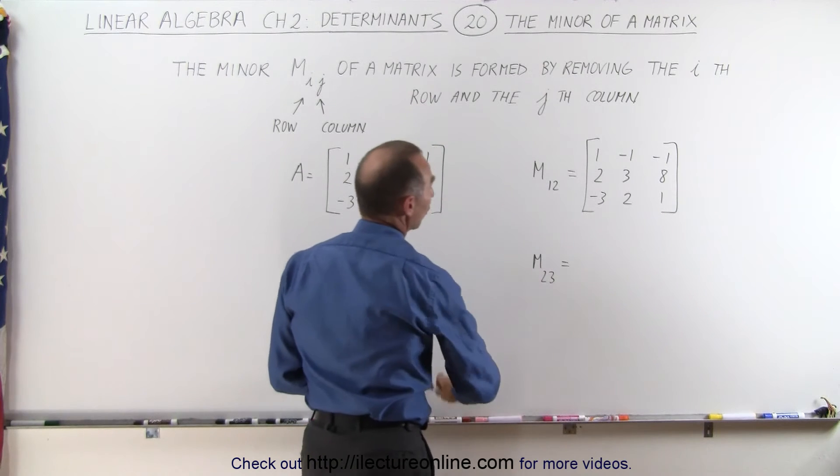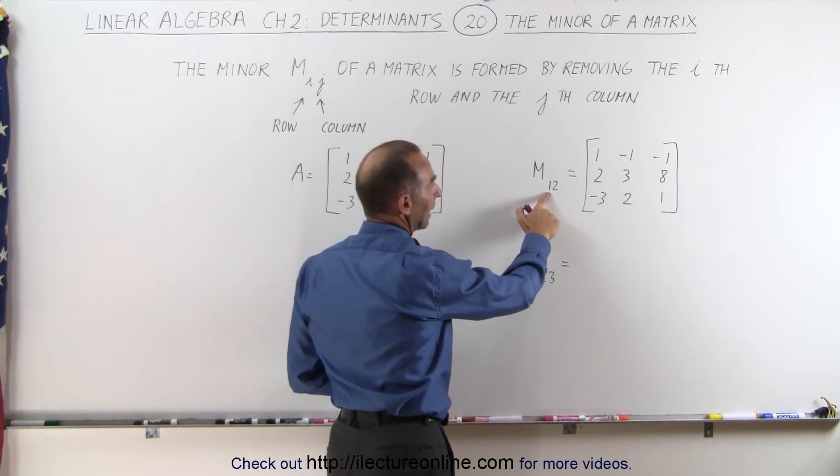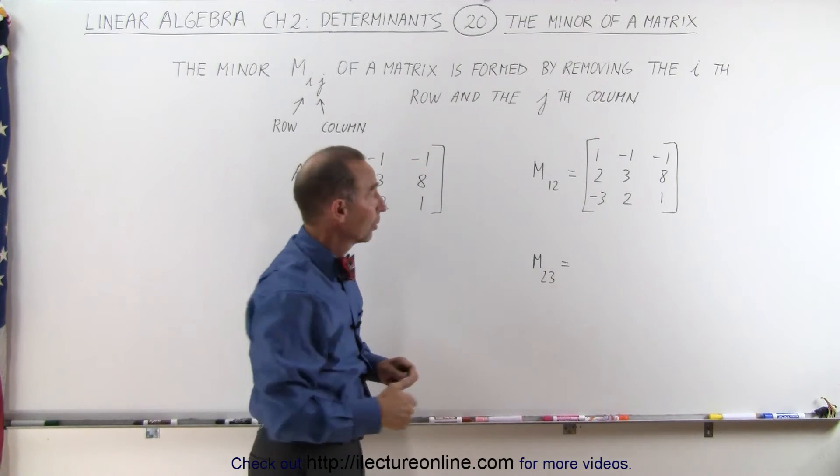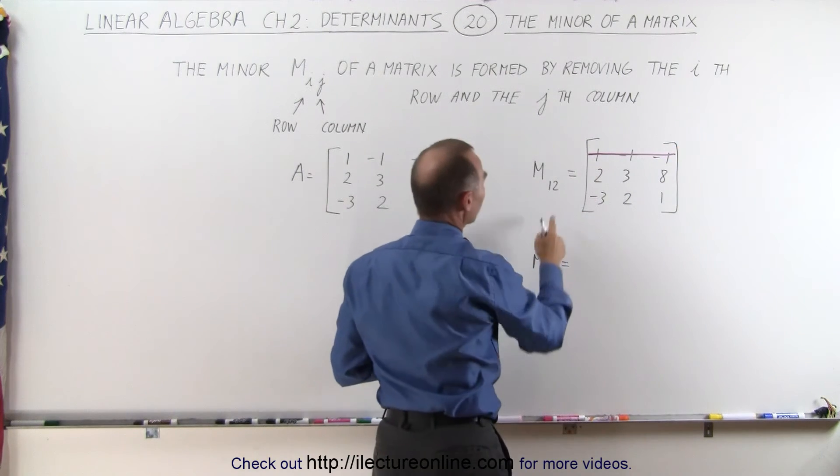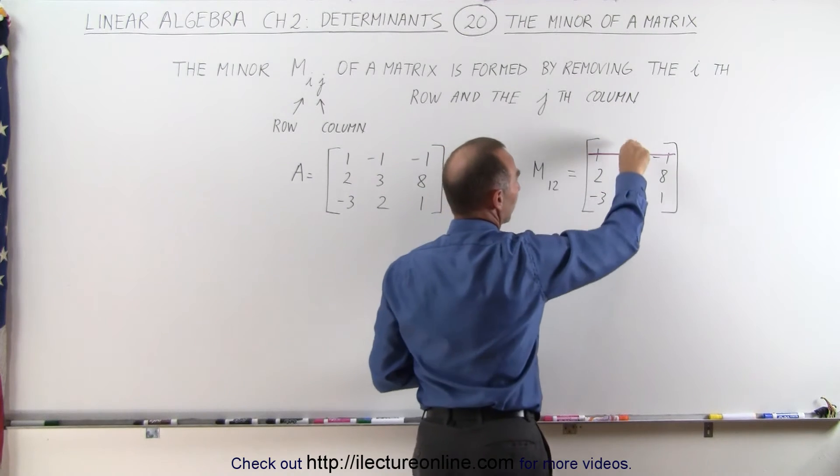And then you're going to remove the first row and the second column. The first row is this row right here, so just put a line right through it, and you're going to remove the second column, this column right here.